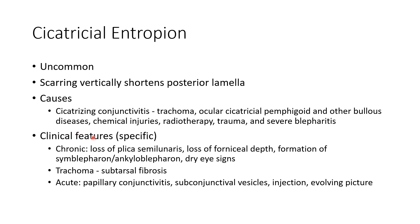The clinical features specific for cicatricial entropion are: in chronic cases there will be loss of plica semilunaris, loss of fornicial depth, formation of symblepharon or ankyloblepharon, and dry eye signs. In case of trachoma, there will be subtarsal fibrosis. In acute cases there can be papillary conjunctivitis, subconjunctival vesicles, injection, and it will show an evolving picture.